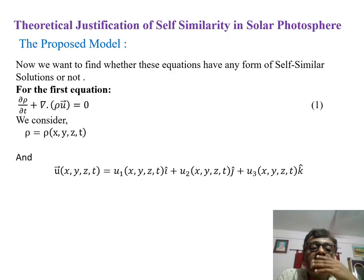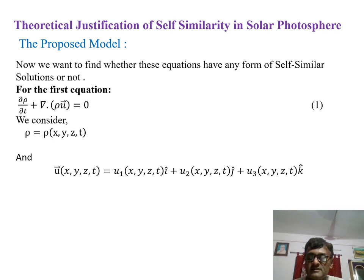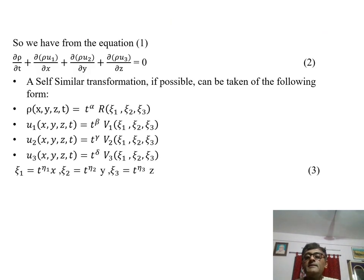What is our proposed model? Let us begin with the first equation. We propose here the rho function, the u vector in this manner as given here. We consider rho as a function of the X, Y, Z coordinates from space and T as time. And also we take the I, J, K coordinates of the u vector as U1, U2, U3 respectively. All are supposed to be the functions of X, Y, Z and time T. If we put these particular expressions of u as well as rho in the first equation, we will be having this number 2.